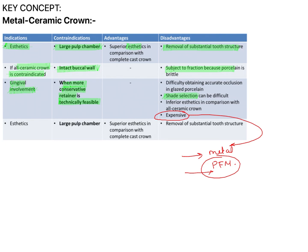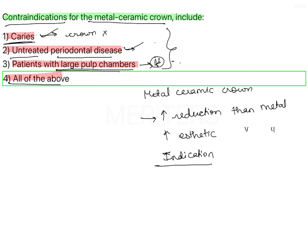An obvious contraindication of metal ceramic crown is large pulp chambers, but the answer should be all of the above — because caries and periodontal disease are absolute contraindications of any full coverage crown. So the answer is option 4.